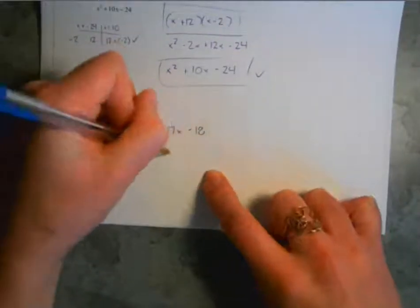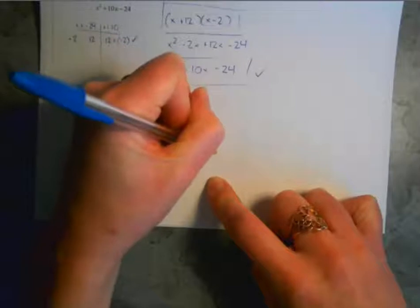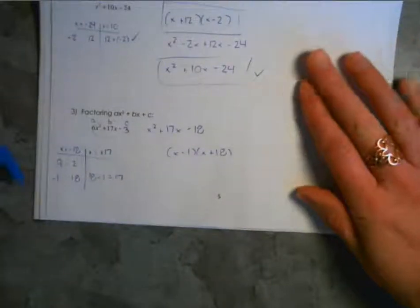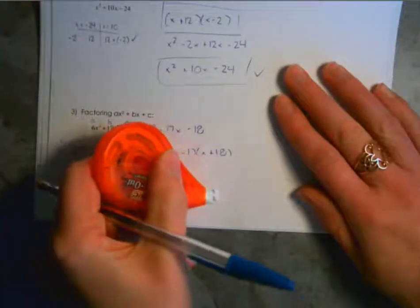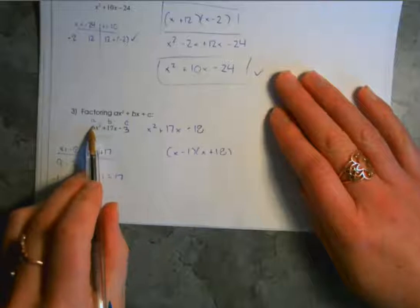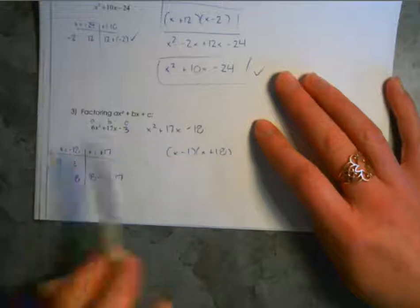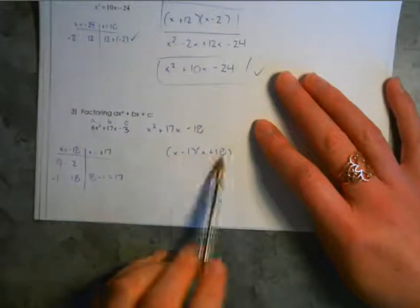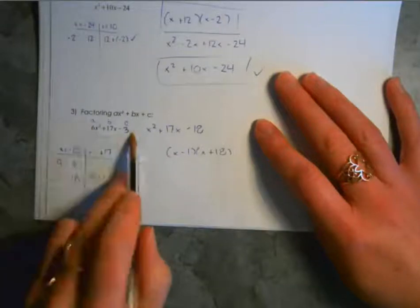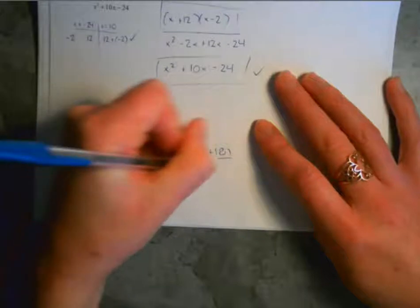We put them into brackets: x minus 1 and x plus 18. Now with the swing method, we're swinging back and forth to account for the multiplication we did — we can't just move that number over without consequences. So now that we've solved for these brackets, we need to divide that 6 out of the number terms we created through the multiplication, to undo it. So we divide by 6 in each bracket — but only the number values.